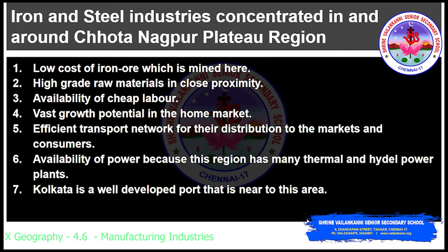The sixth factor is availability of power — this region has many thermal and hydel power plants, so power supply is adequate. Additionally, Kolkata, which is near this area, has a well-developed port. All these factors are responsible for the concentration of iron and steel industry in and around the Chotanagpur plateau region.